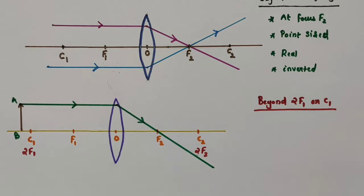The characteristics when the object is kept at C1 or 2F1: the image is formed at 2F2. The height of the object and height of the image are the same — the image formed has the same size as the object. Actual intersection of these rays takes place, so the image formed is a real image, and it is an inverted image.